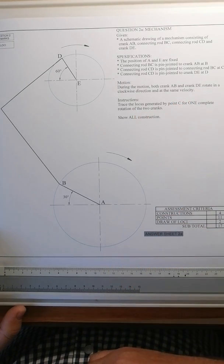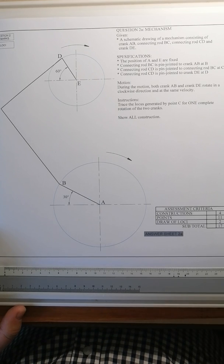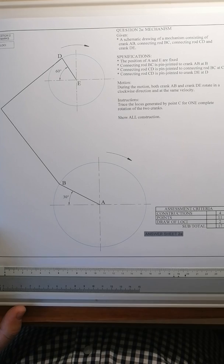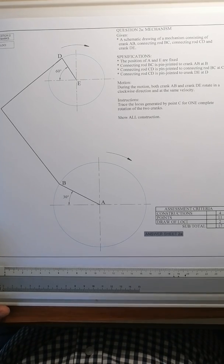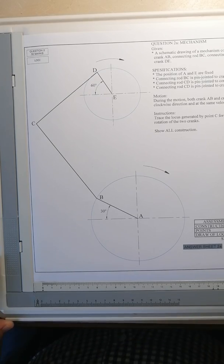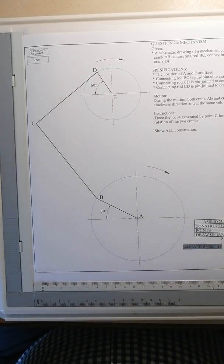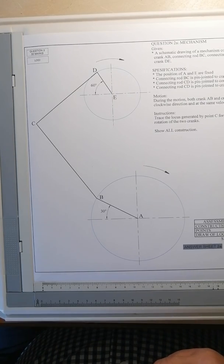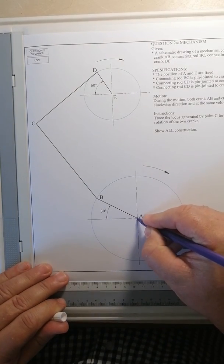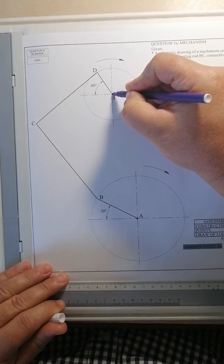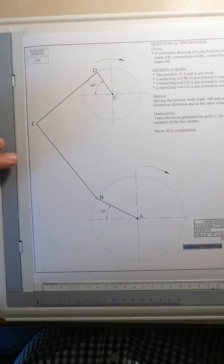The instruction is to trace the locus generated by point C for one complete rotation of the two cranks. We need to show all constructions. I'm going to move away from the question so you can see the drawing a little bit better. What is important for me is point A. We know that point A is fixed. Point E is fixed so those points can't shift.